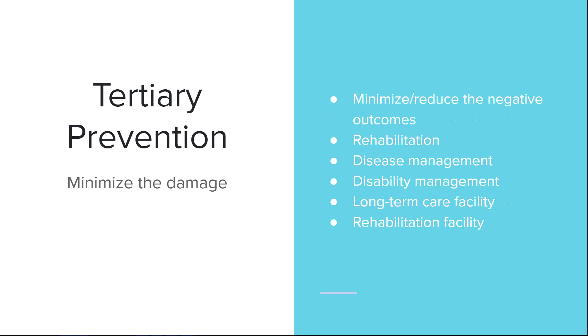Tertiary prevention aims to minimize the damage and reduce negative outcomes. This looks like rehab, disease management such as medications — for example, long-acting and short-acting insulin for diabetes — and disability management. If someone lost a leg in an accident, we help them through physical and emotional rehab and learn to work with a prosthetic. You'll see this in long-term care and rehab facilities.